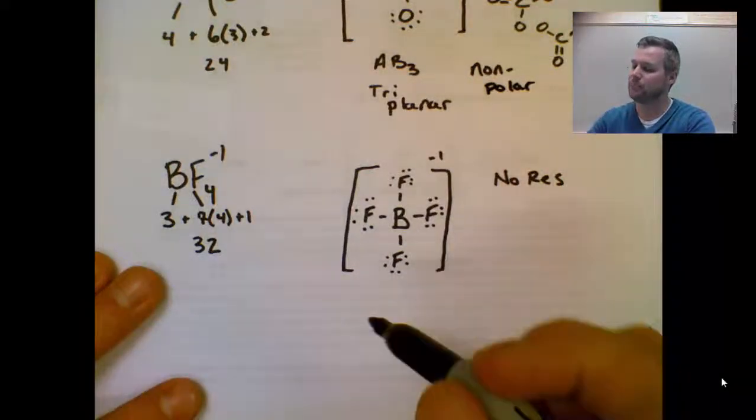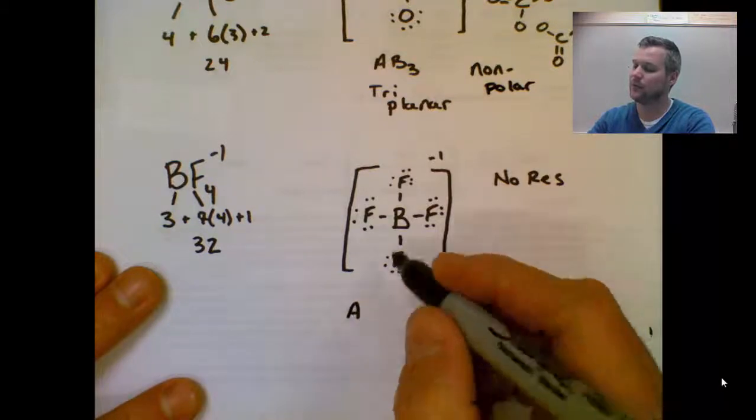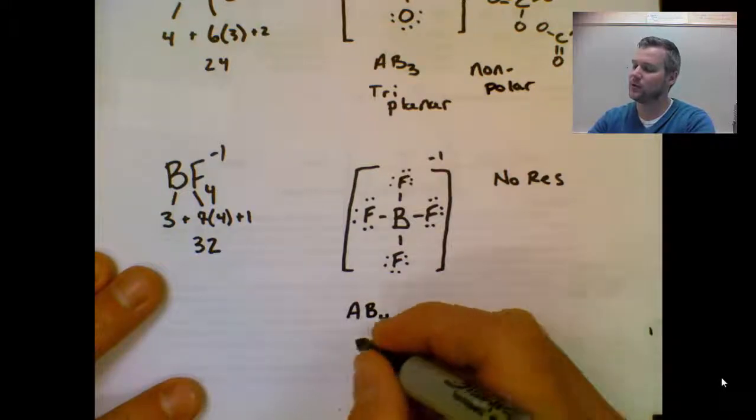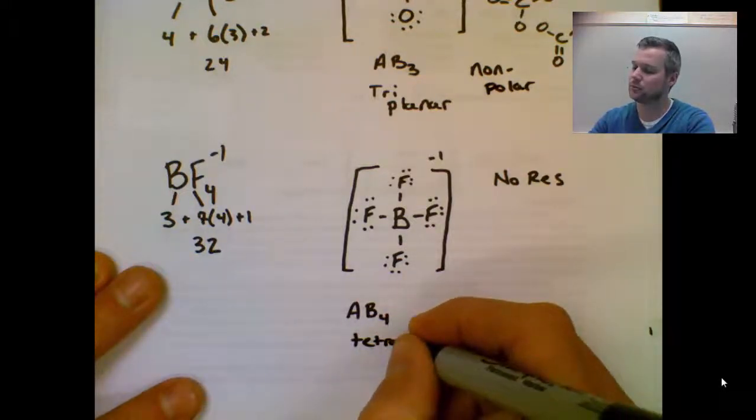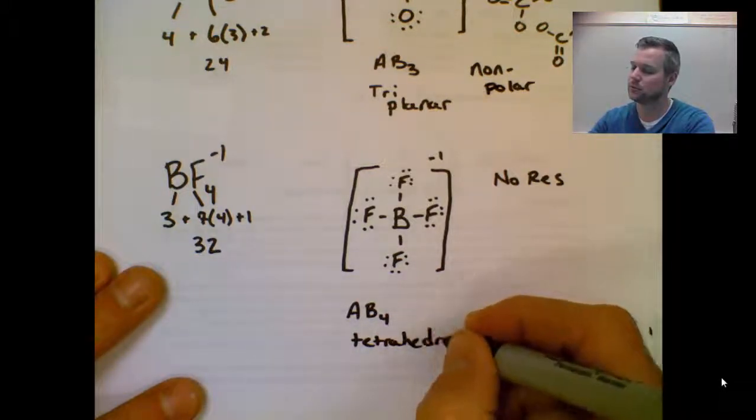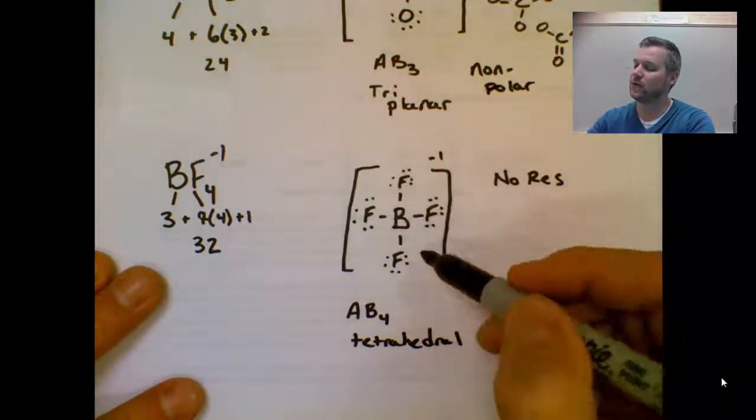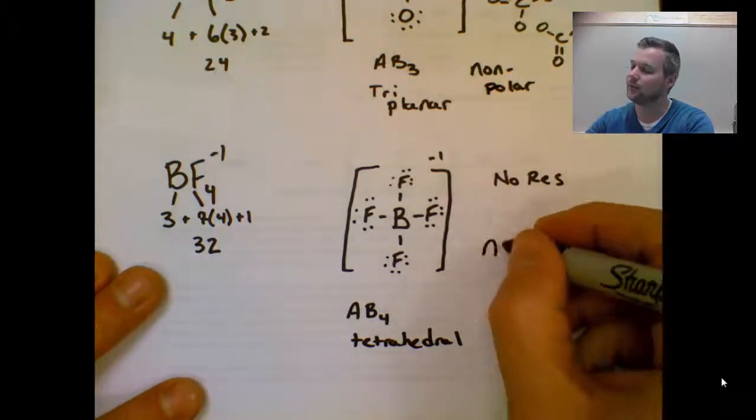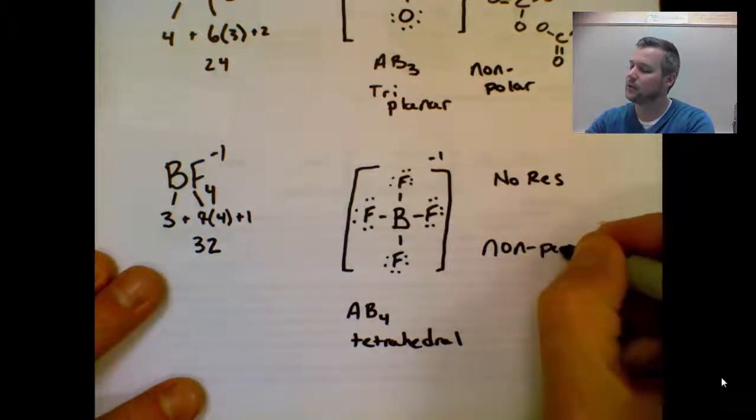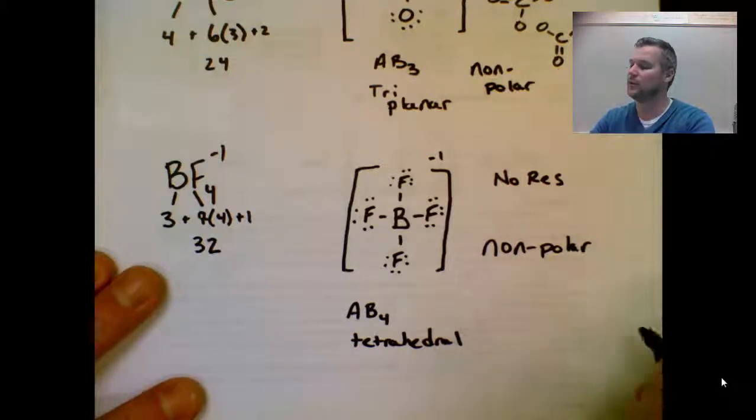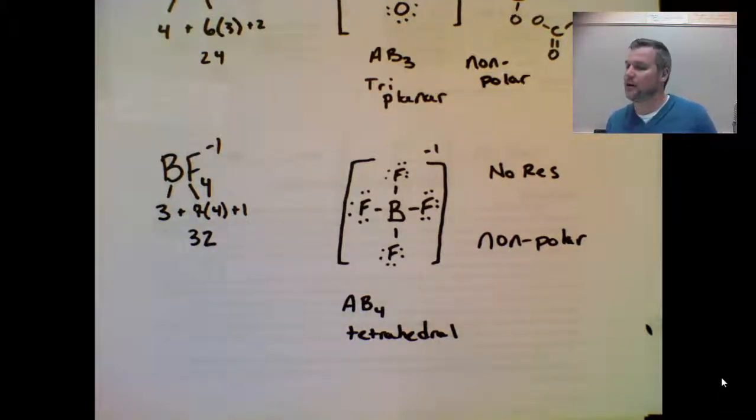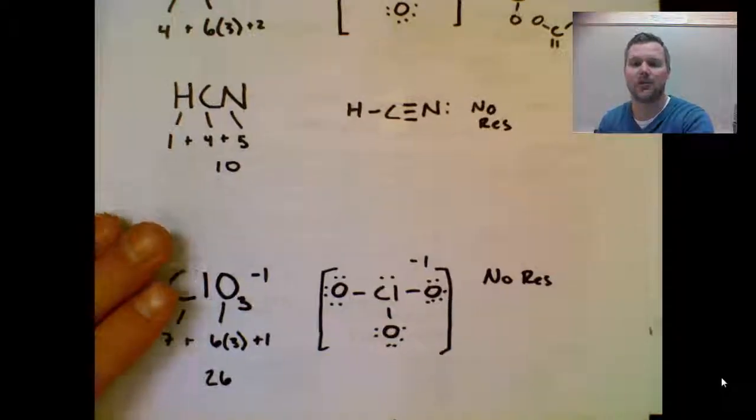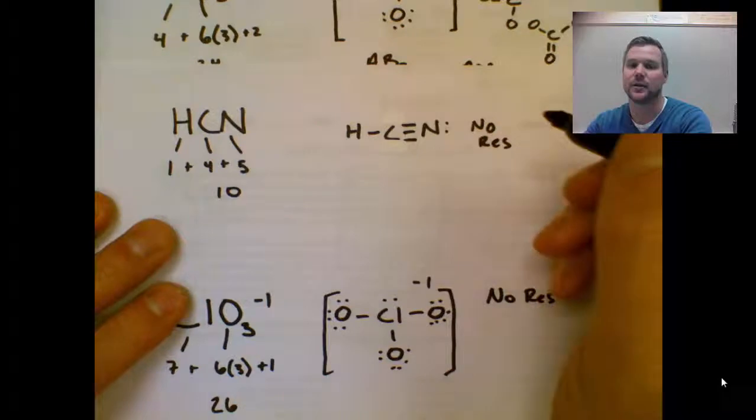Bottom atom. B is your central atom. How many bonds? 1, 2, 3, 4 bonds. AB4. If you look up AB4, it's called tetrahedral. Since boron is 100% surrounded by F, there are no lone pairs attached directly to boron. That makes this non-polar. Even though the boron-fluorine bonds are polar, the polarity of those bonds cancels each other out. The net dipole moments cancel each other out because the vectors add together to zero.